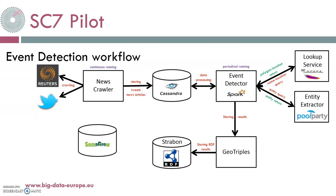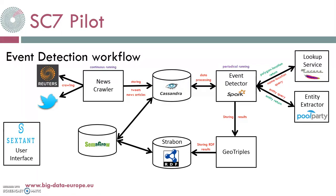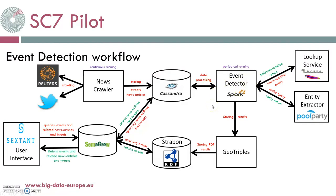In the meantime, Semagrow is running. It federates Cassandra and Strabon and provides unified access to them. Now everything is ready for the user to initiate an Event Detection. The user can ask for events and use restrictions by selecting a certain area on the map, a date window, or a keyword. Sextant sends queries to Strabon and Cassandra through Semagrow. Strabon and Cassandra send back the events and the sources of the events respectively, through Semagrow to Sextant, and all of them are visualized for the user.